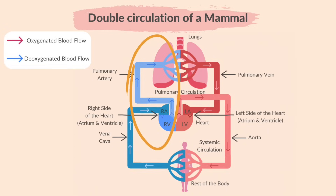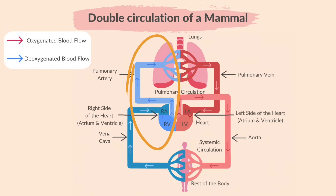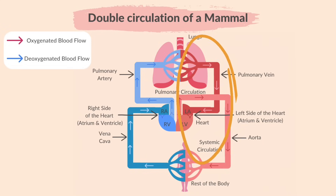The right side of the heart receives de-oxygenated blood from the body and pumps it to the lungs — that is called pulmonary circulation. The left side of the heart receives oxygenated blood from the lungs and pumps it to the body — this is called systemic circulation.